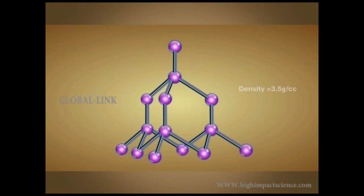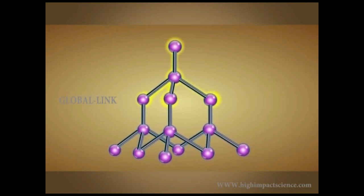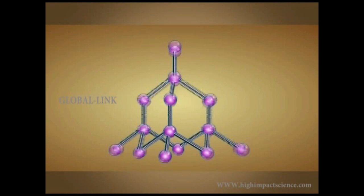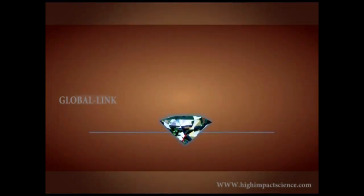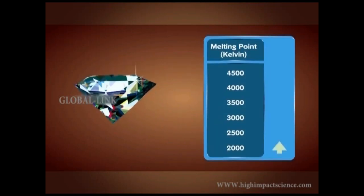Here, no electrons are available as they are all involved in bonding. Because of the absence of free electrons, diamond is a bad conductor of electricity. Diamond has a high melting point of 4000 Kelvin or more.